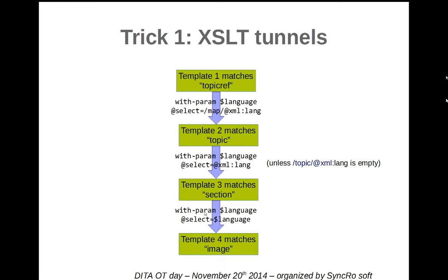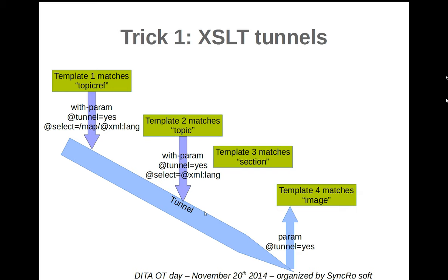I will now show you how it would be done with tunnels. We would still create a parameter in the topicRef template, but this time we add the tunnel attribute with value yes to the with-param element. This means we push the parameter into a tunnel that is available to all further templates processed, either via apply-templates or call-template. In the topic template, we check whether xml:lang is available or not, and replace the language parameter in the tunnel with a new value. In section, we simply don't declare it at all since we don't need it. And finally, in image, we retrieve it from the tunnel.